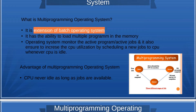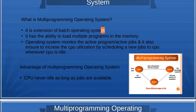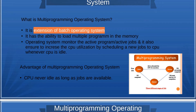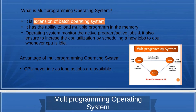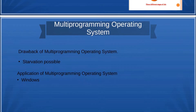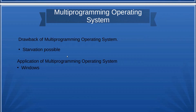To remember: multiprogramming is an extension of batch operating system. In batch operating system, the CPU was often idle because when one job needed an IO operation, no other job could use the CPU. In multiprogramming, the next job comes to the CPU during that time, so the CPU is never idle. Starvation is still possible, and this problem can be addressed by multitasking operating system.